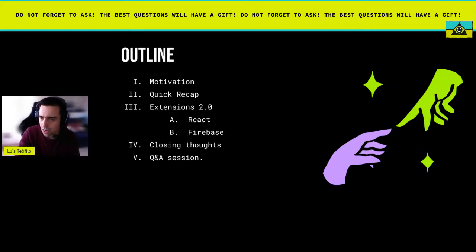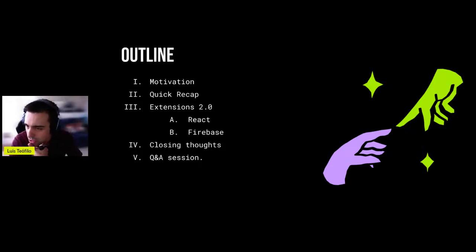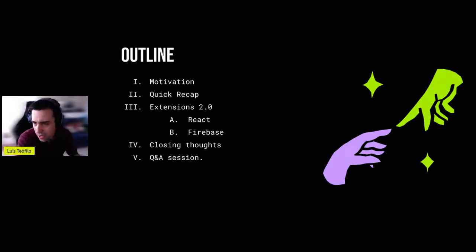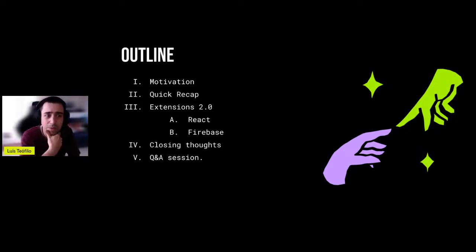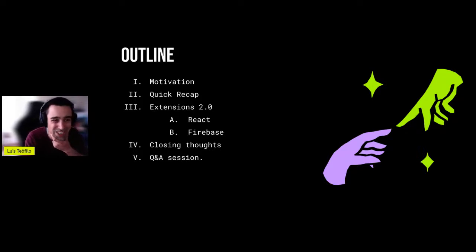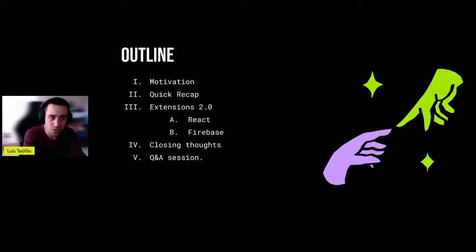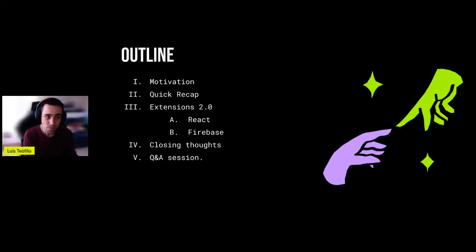Let me take a quick look at the chat. We have one from Mugato: 'JS runs as a single thread - how can we create a new instance of our app?' I don't fully understand the question as it relates to extension development, but what I can tell you is that you can create new instances using service workers. Extensions do leverage service workers - they have workers running on the browser that you can communicate with, and we are going to explore those throughout the presentation.